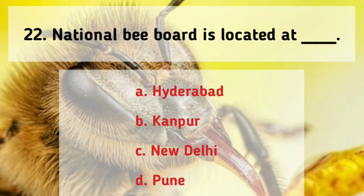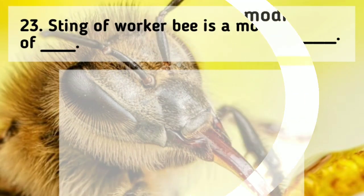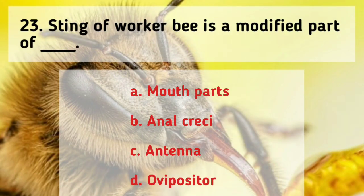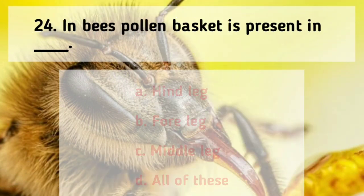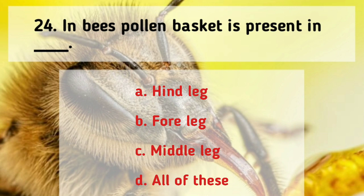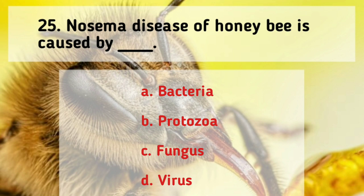The National Bee Board is located at New Delhi. The sting of a worker bee is a modified ovipositor. In bees, the pollen basket is present on the hind legs. Nosema disease of honey bee is caused by a protozoan.